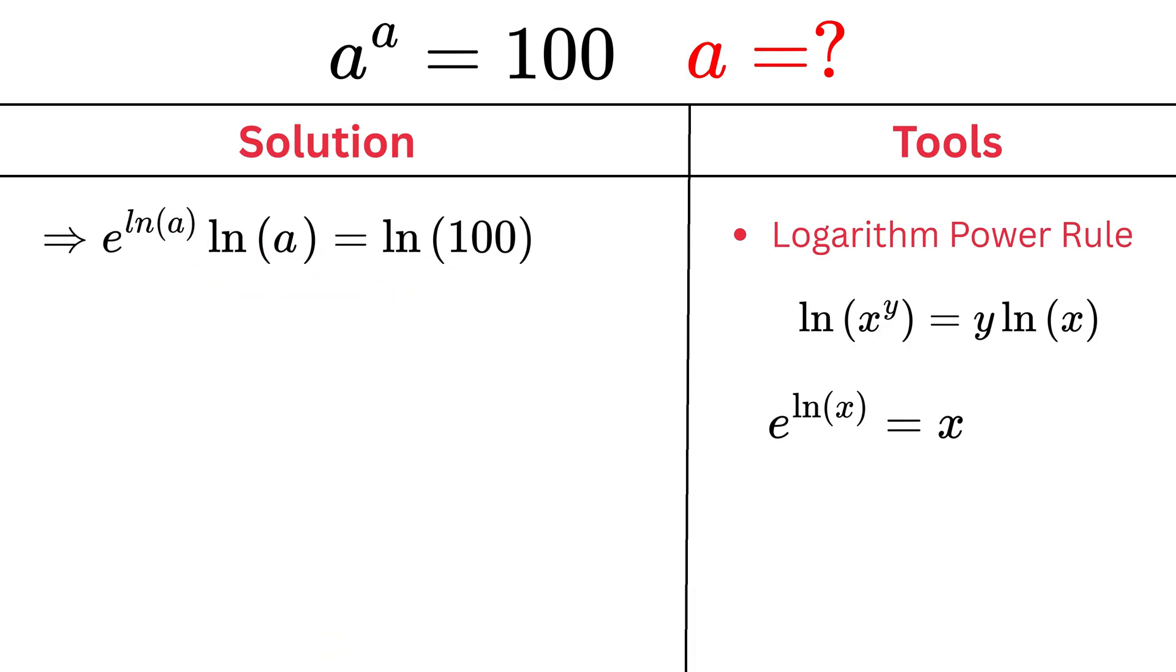Step 5: Introducing the Lambert W function. Now, the Lambert W function is the inverse function of x times e raised to the power x.